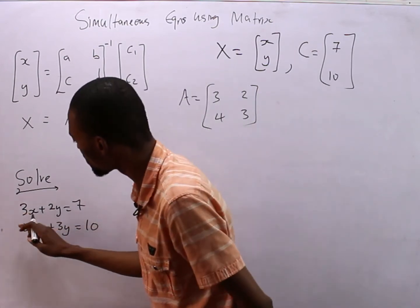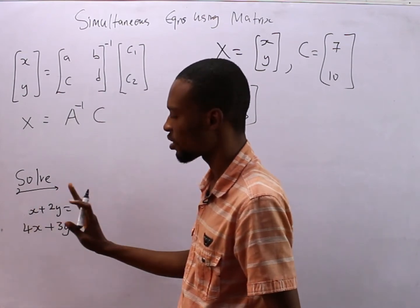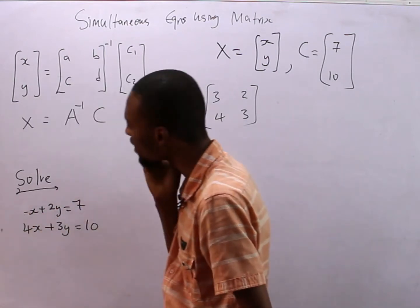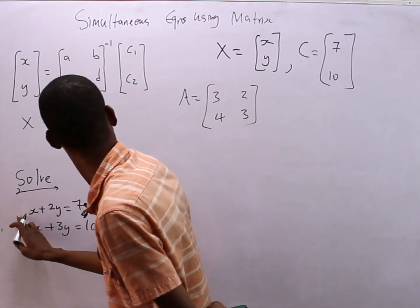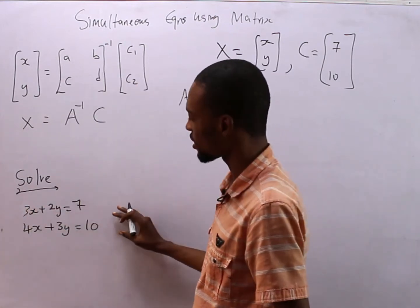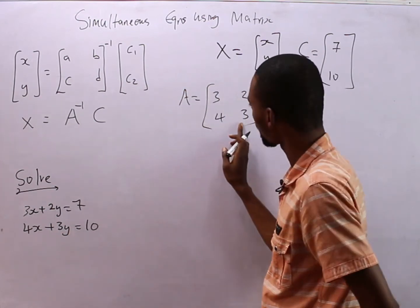So you just take this one: 3, 2, 4, 3. So it's simply 3, 2, 4, 3. If here we have 2b only, the coefficient of x is simply 1 so here would have been 1. If it were minus x, here would simply be minus 1. So any coefficient that the variable is carrying, you pick it.